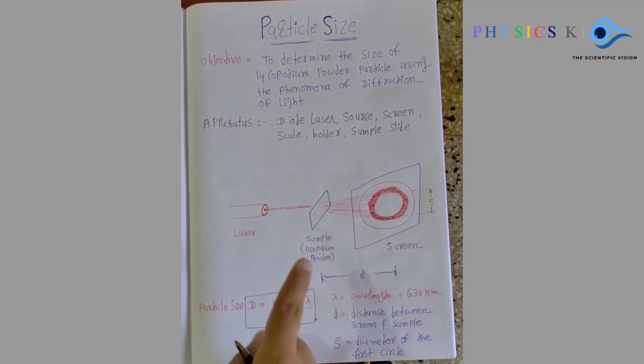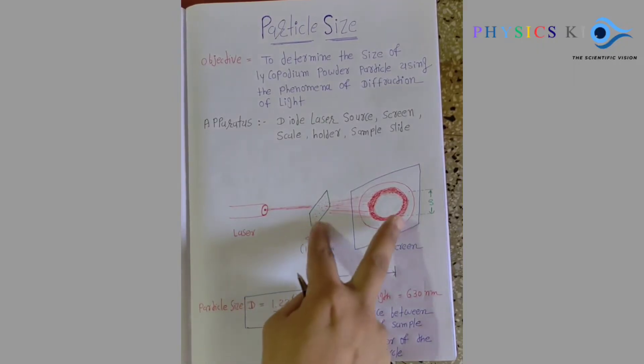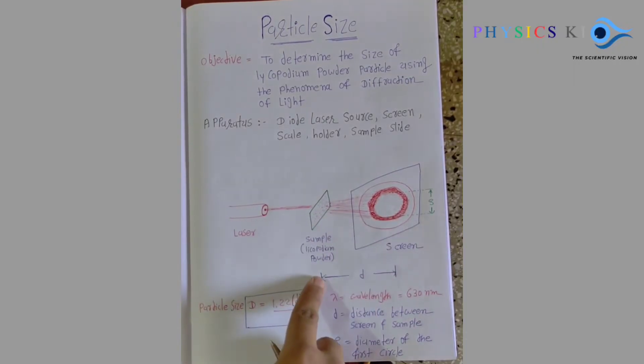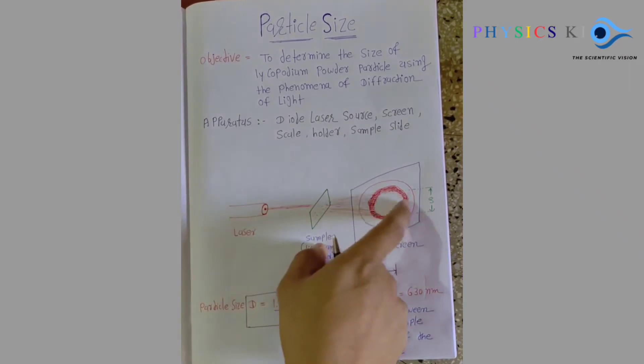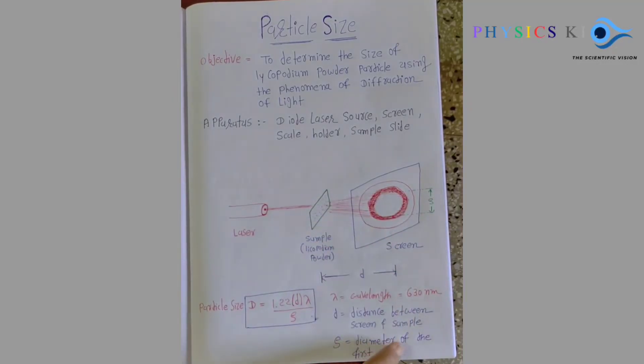So in this experiment, I have to measure only two values: one which is distance between sample and screen - here I am denoting small d, which is distance between sample and screen, and on the screen I have to measure the diameter of the first circle.